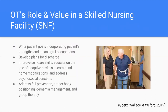Within a skilled nursing facility, an OT will write patient goals incorporating the patient's strengths and meaningful occupations, develop a discharge plan, and work on improving self-care skills such as bathing, grooming, and dressing. They educate on the use of adaptive devices and recommend home modifications for discharge. OTs also address psychosocial concerns such as depression and anxiety, and may educate on fall prevention, proper body positioning, dementia management, and group therapy.